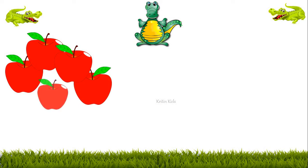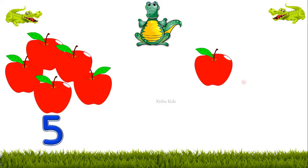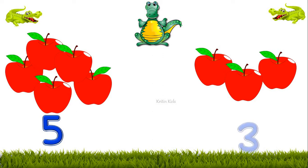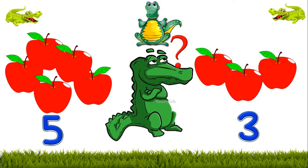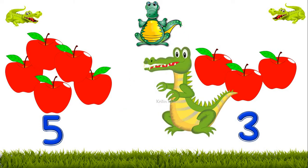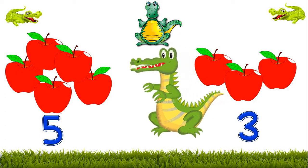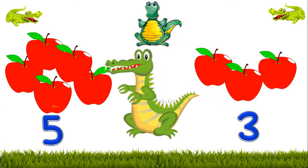Here we have 5 apples and here we have 3 apples. Which set of apples will Ali eat? Ali would like to eat 5 apples because 5 is more than 3. So 5 is the bigger number here.